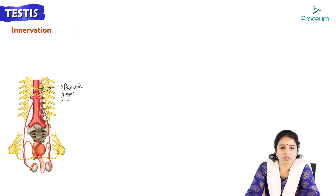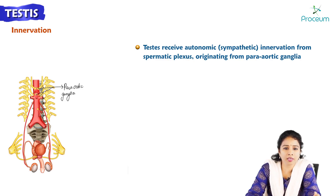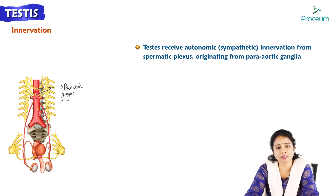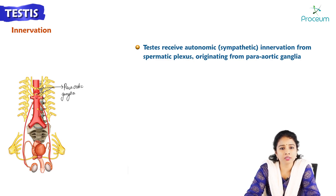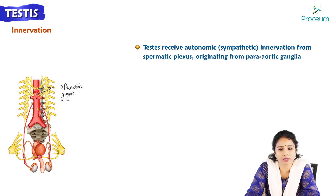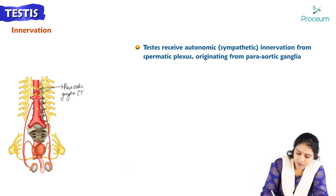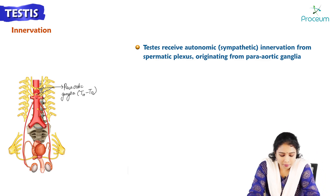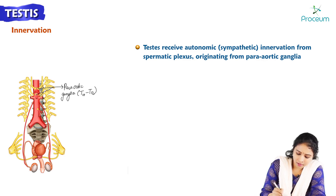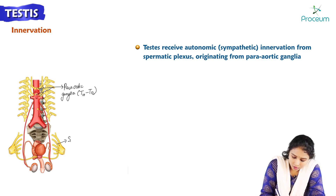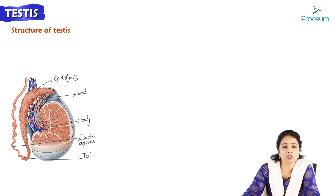The testis receives autonomic supply from both sympathetic and parasympathetic divisions. Sympathetic innervation comes from the spermatic plexus, also called the testicular plexus, originating from the paraortic ganglion with root values T10 to T12. Parasympathetic supply has the root value S2 to S4.